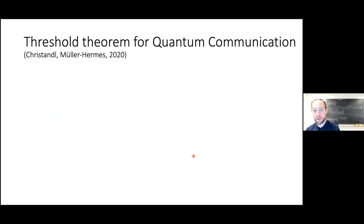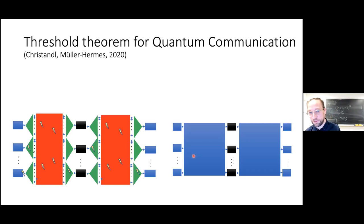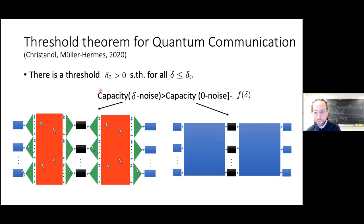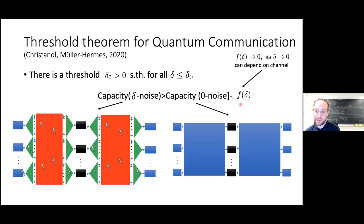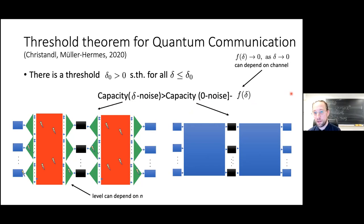The main result is a threshold theorem for communication: there exists a threshold such that for all noise rates δ below it, the fault-tolerant capacity at noise δ is lower bounded by the noiseless capacity minus a small function that goes to zero as δ → 0. This shows the capacity is positive in non-trivial cases and is continuous in δ — as δ → 0 the fault-tolerant capacity approaches the noiseless capacity.